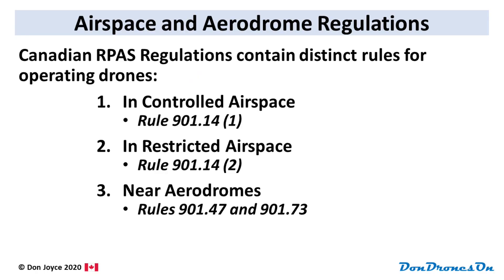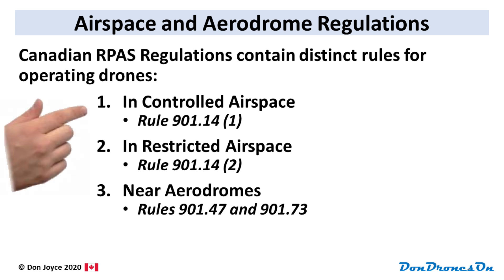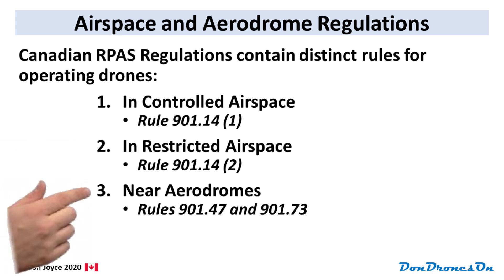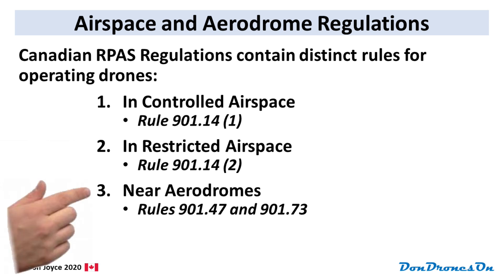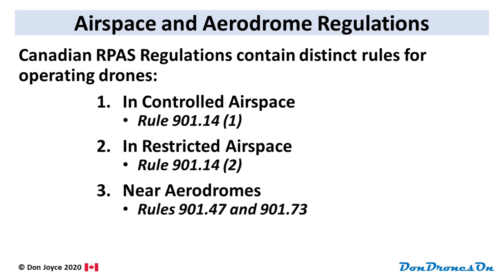The current Canadian RPAS regulations contain distinct rules for operating drones in three areas: in controlled airspace, in restricted airspace, and near aerodromes. We're going to walk through each of those three areas to understand what they are, what the regulations are, and what that means for you as a drone pilot.